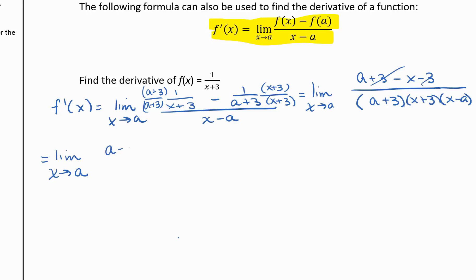And we have a minus x over a plus 3, x plus 3, x minus a. Now we need to cancel out this x minus a in the denominator.